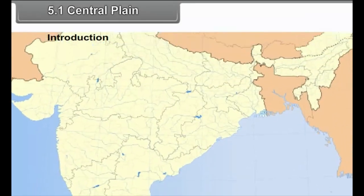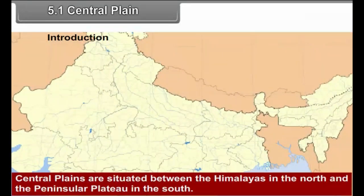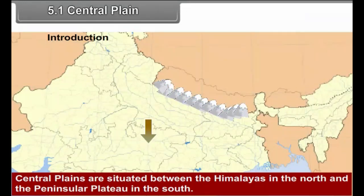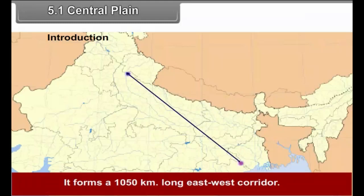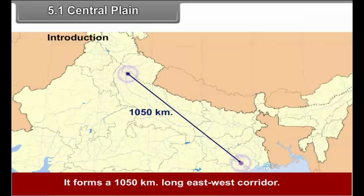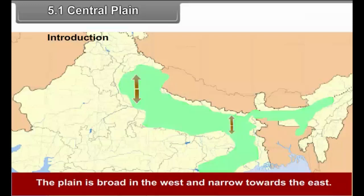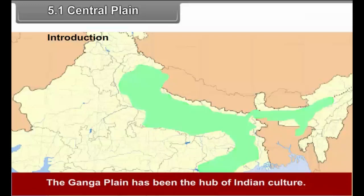5.1 Central Plain — Introduction. Central Plains are situated between the Himalayas in the north and the Peninsular Plateau in the south. It forms a 1050 km long east-west corridor. The plain is broad in the west and narrow towards the east. The Ganga Plain has been the hub of Indian culture.